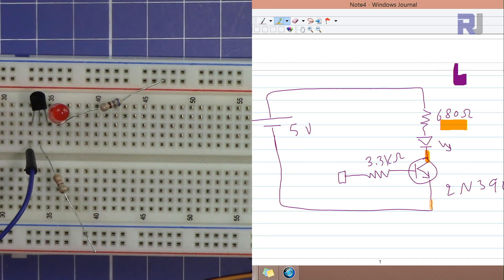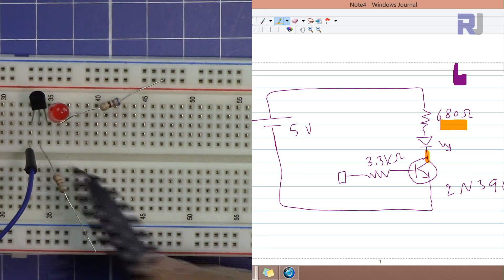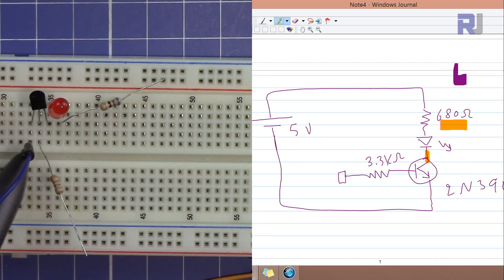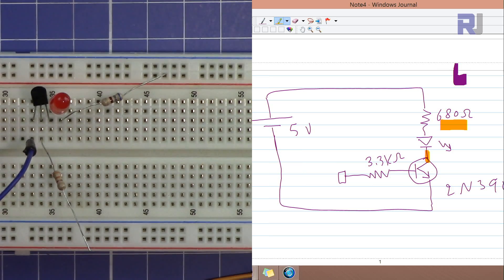And here is the emitter of the transistor which is connected here to the negative. So that is my negative.